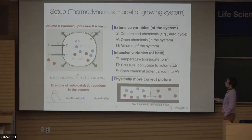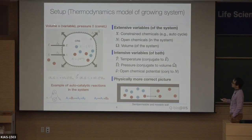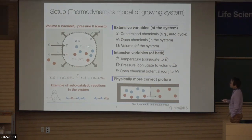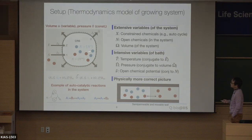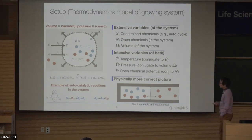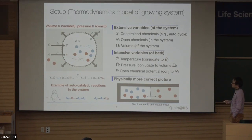Let me move on to the setup. We consider a system where omega is the volume of the system, which is variable, and the external pressure on the system is constant. We have two types of molecules: the blue ones are constrained chemicals confined inside the system, and the red ones are open chemicals that can diffuse across the membrane or barrier between the system and the environment.